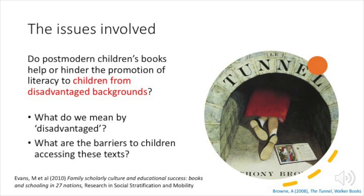I will look at how the relationship between children from disadvantaged backgrounds and postmodern books is different from that of more privileged children. To do that, I will need to explore what I mean by disadvantaged backgrounds. Many of the academic texts I've been looking at use examples of apparently affluent children who get these postmodern stories and images. One of the most useful texts here will be Family, Scholarly, Culture and Educational Success: Books and Schooling in 27 Nations, which brings research showing that it is the number of books the child has regular access to that makes the biggest difference, not necessarily the child's economic background or the professions of their parents.